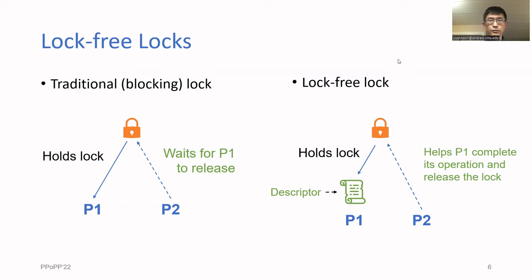Instead, lock-free locks store a descriptor object describing P1's critical section. Then if P2 wants the lock, it uses this descriptor to help complete P1's critical section and release the lock on P1's behalf. Then P2 can write its own descriptor and proceed with its own operation.